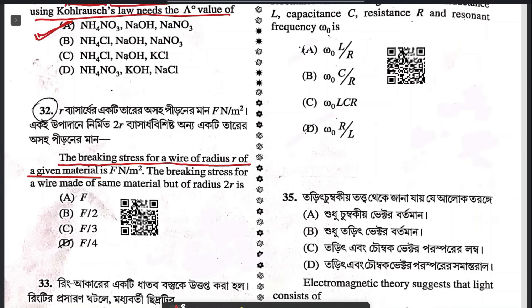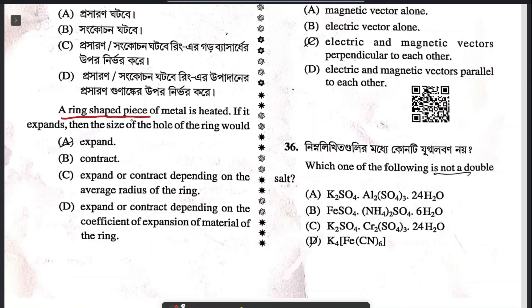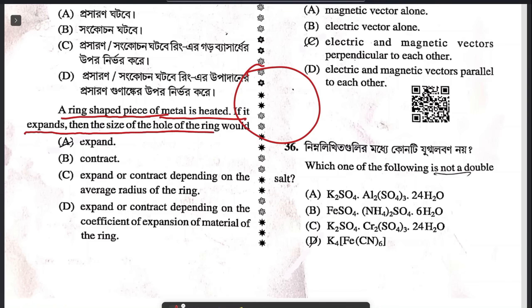Question 32: the breaking stress for a wire of radius R of a given material is F_n/M². The breaking stress for a wire of the same material but radius 2R — the only possible answer is B. Question 33: a ring-shaped piece of metal is heated. If it expands, the size of the hole of the ring will also expand.